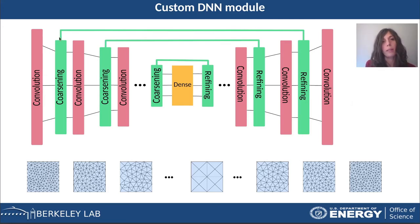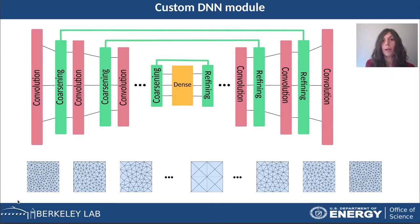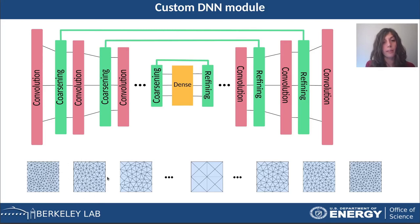We also have a residual connection between the coarsening and the refining process that allows preserving the information coming from the coarsening process. This figure at the bottom explains what is going on inside the deep neural network module: it is capturing different properties at different zoom levels. We start with the initial fine graph with many nodes and edges, then reduce the zoom a little bit and apply convolution to the features.